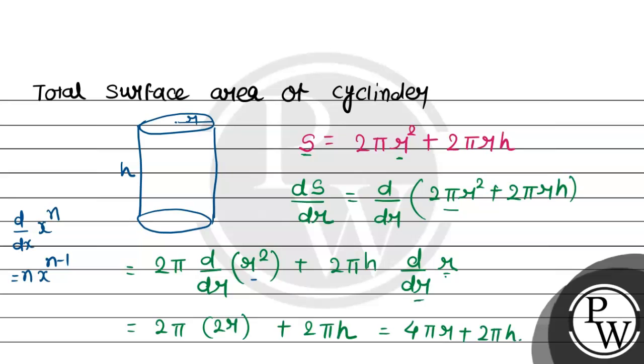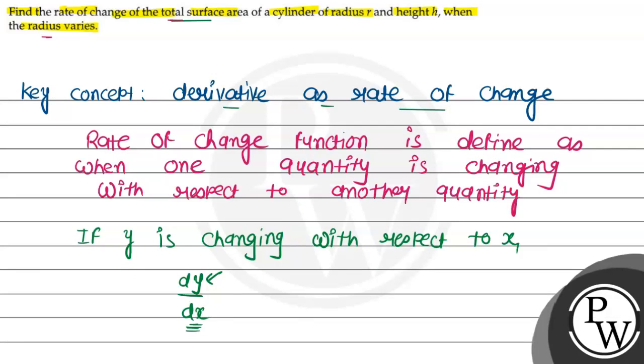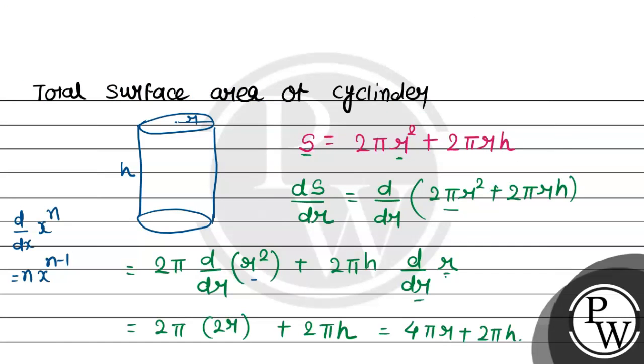That is the rate of change of total surface area of cylinder when radius varies. This is the solution of the question. I hope the solution helped you. Thank you.